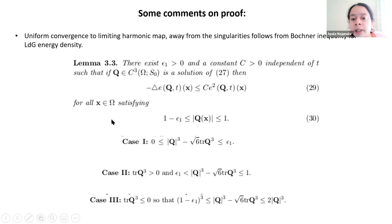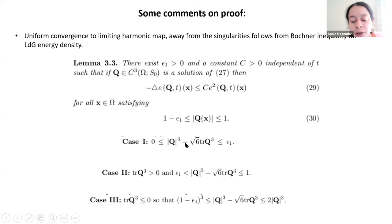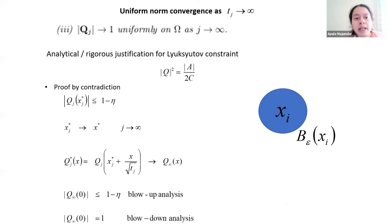The uniform convergence was harder for this particular limit because the Bochner inequality was far more technical — we had to consider three different cases, which was not a problem in the first case of the vanishing elastic constant. Once you have the Bochner inequality, proving uniform convergence away from the singular set can be done.